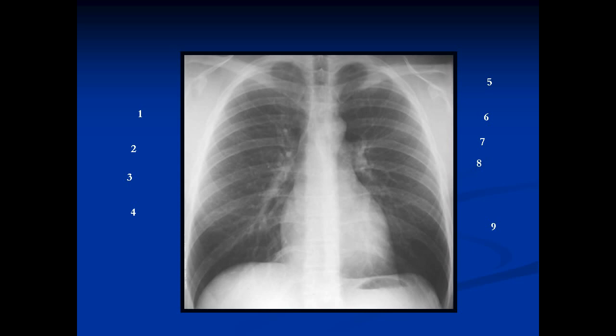We're going to start with the PA view of the chest, and the first structure we're going to talk about is the superior vena cava. There's an interface here — a line you can see adjacent to the mediastinum. On one side of the line is white, on the other side is black. The reason we see this line is because it's an interface between air and soft tissue. If there's no air next to the mediastinum, we will not see the structure. This line comes all the way down from the neck, right to the region of the right atrium, and that line is formed by the superior vena cava.